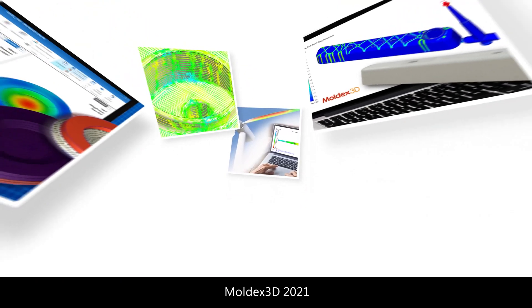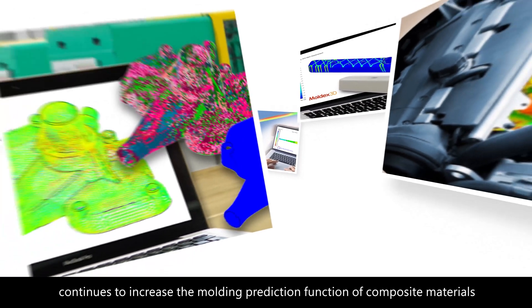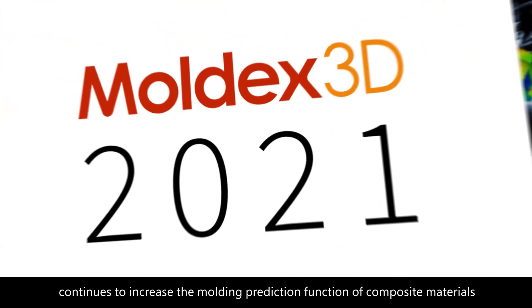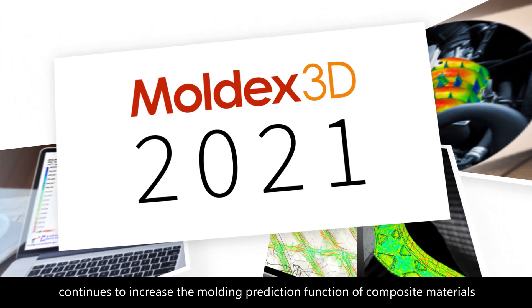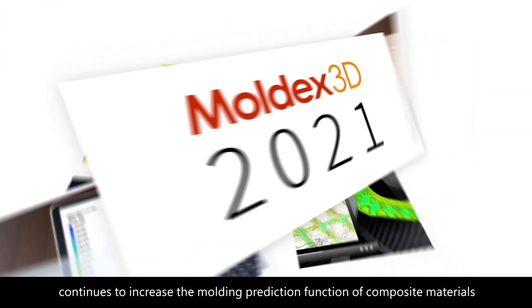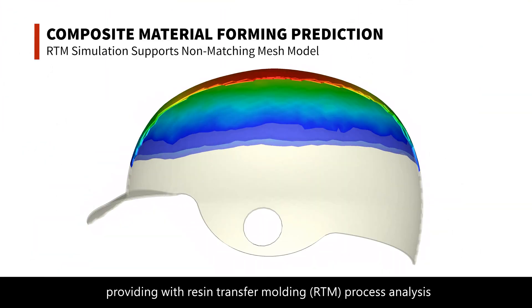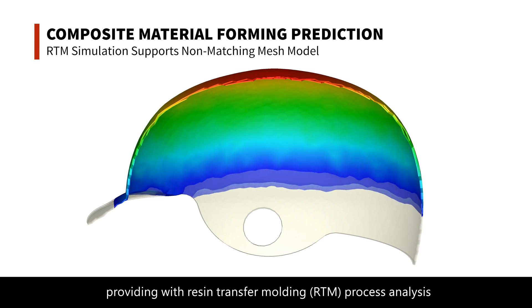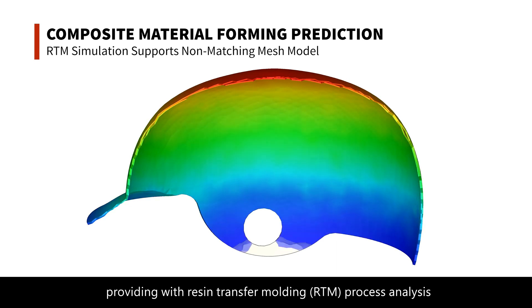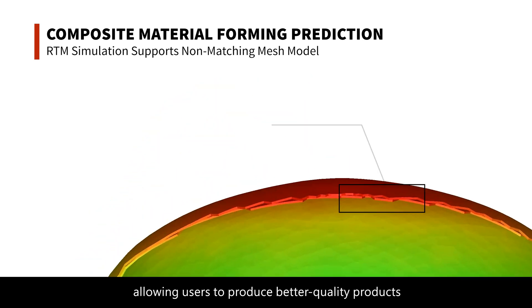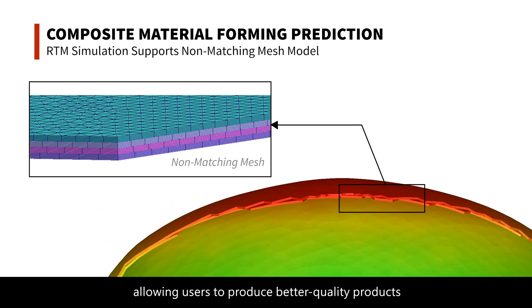Moldex 3D 2021 continues to increase the molding prediction function of composite materials, providing users with resin transfer molding process analysis, allowing users to produce better quality products.